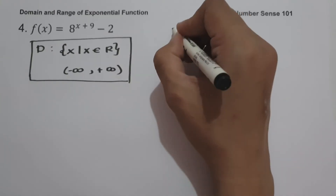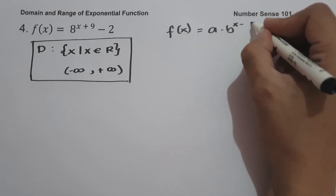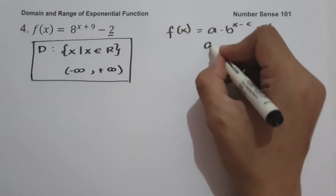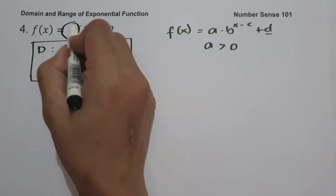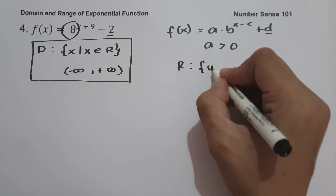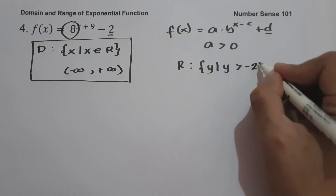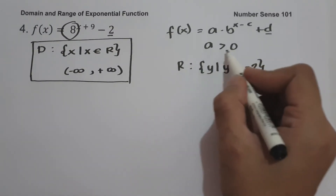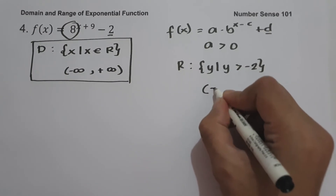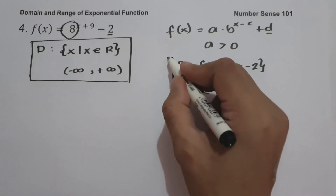To find the range, since the function is written in the form f(x) = a times b raised to x minus c plus d, the horizontal asymptote d is negative 2 and a is greater than 0. Therefore, the range is the set of y values such that y is greater than negative 2. In interval notation, that is from negative 2 up to positive infinity, where negative 2 is not included.